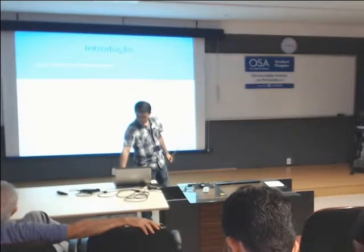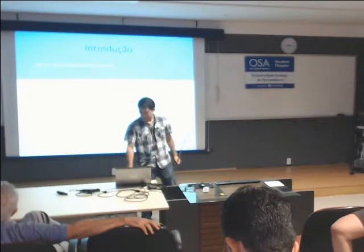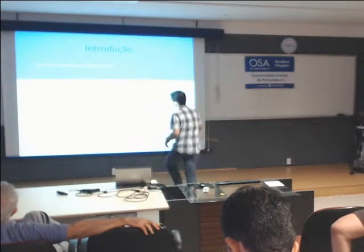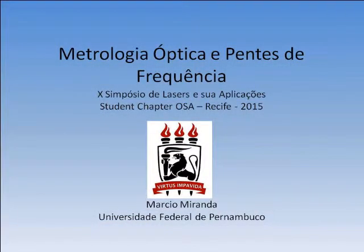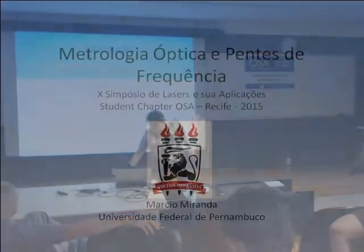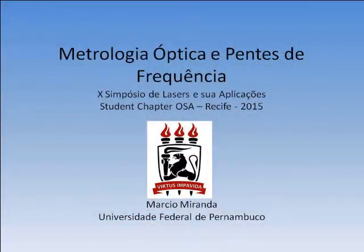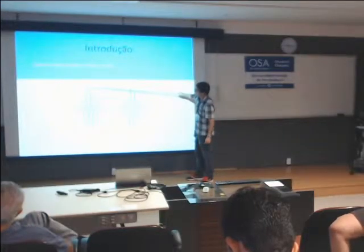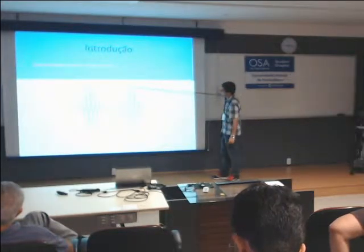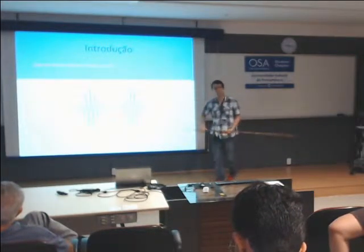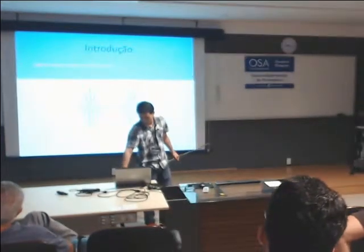Já no laser de modos travados, imagine que você tem essa onda contínua ainda, só que essa onda é modulada por pulsos. Ela é modulada por pulsos, e aí você tem essa configuração onde essa onda, basicamente, sabe onde está cada pulso. Então você tem o que se chama de coerência de fase entre pulsos.